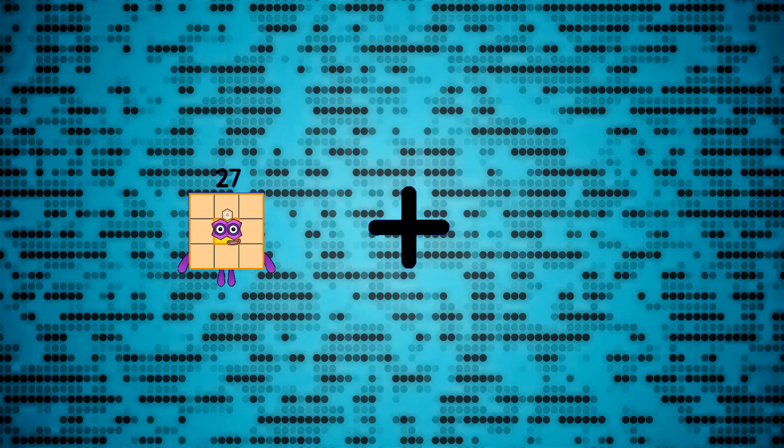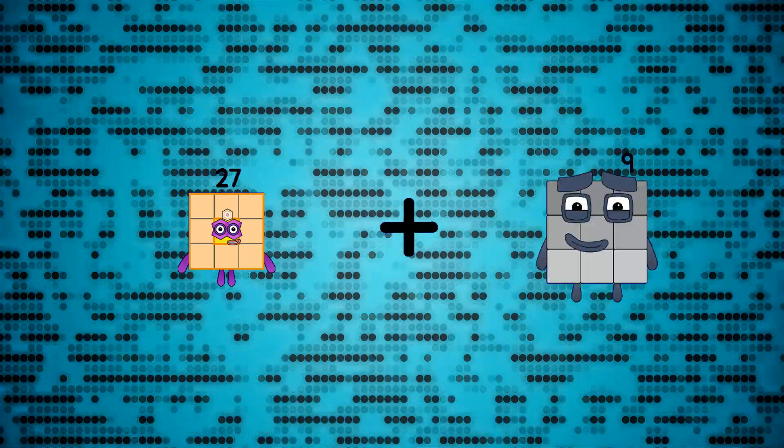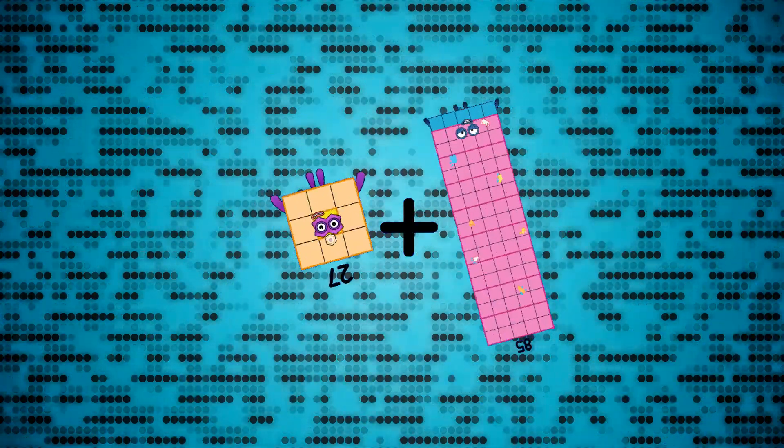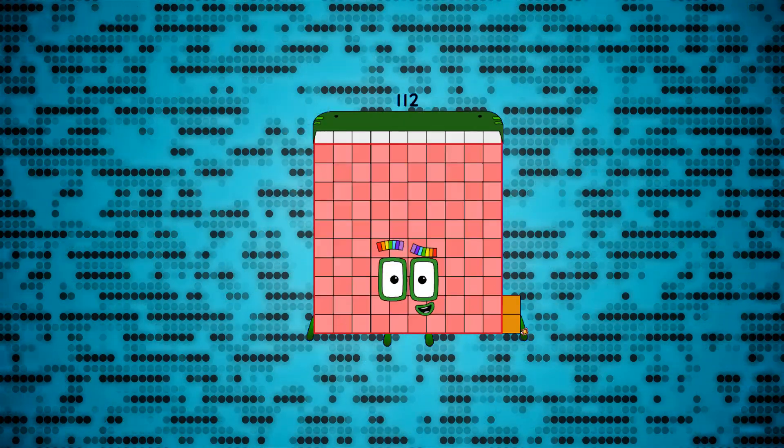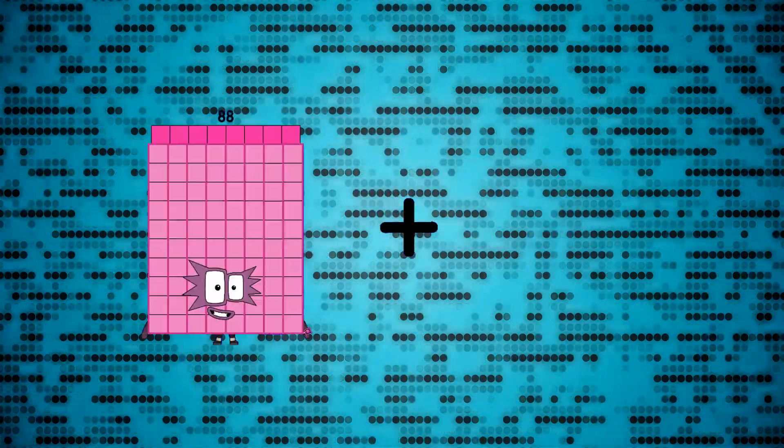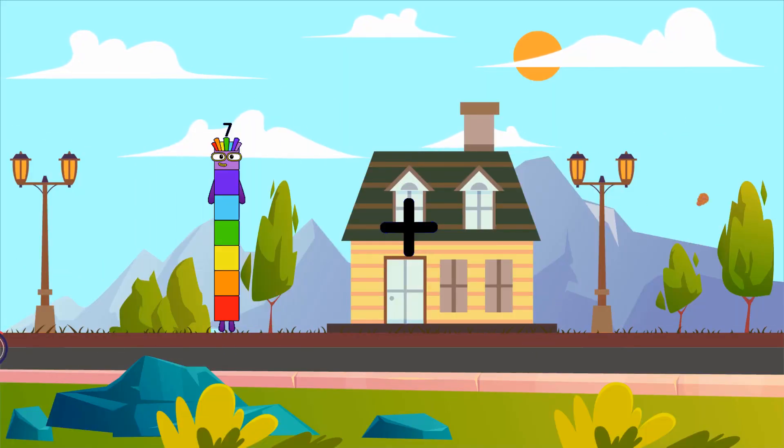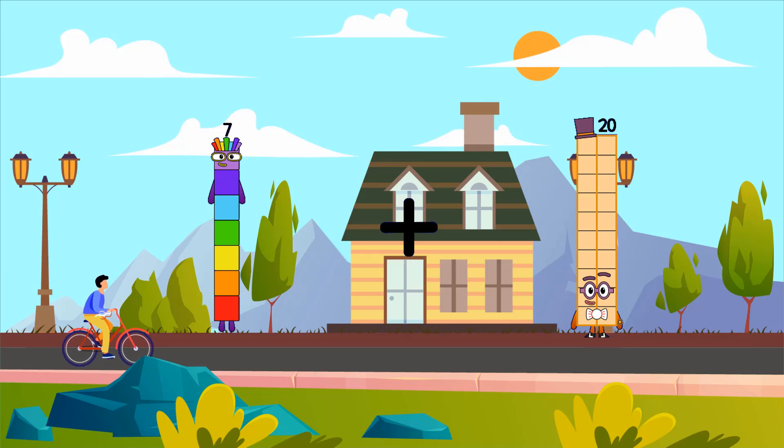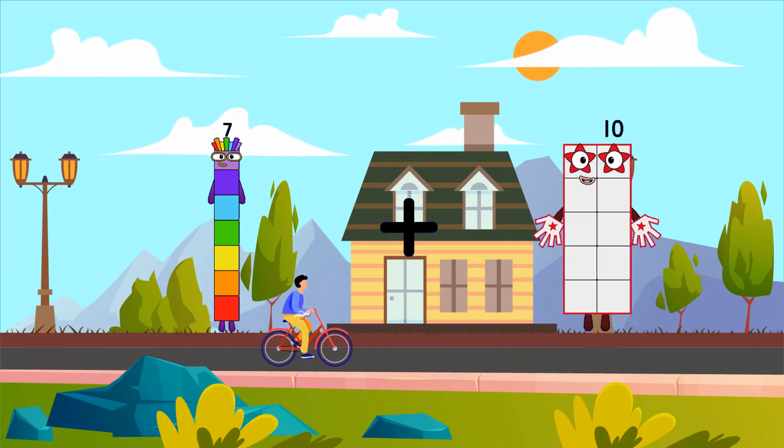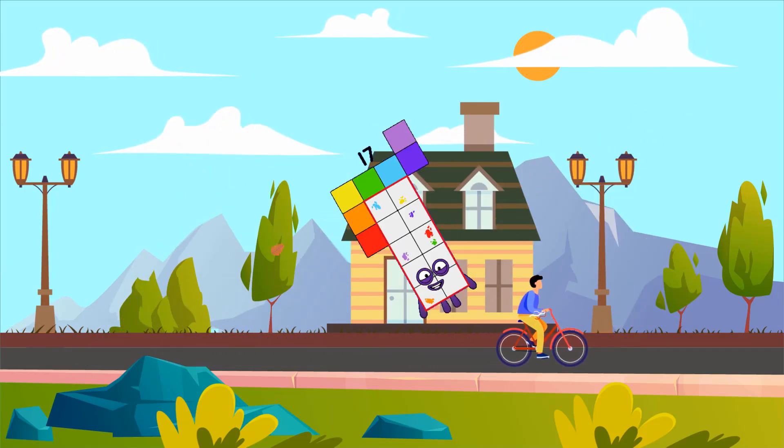27 plus 85 equals 112. 7 plus 10 equals 17.